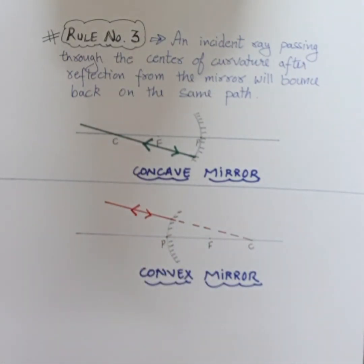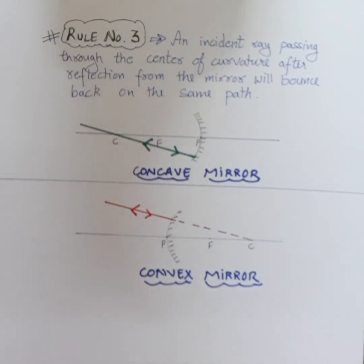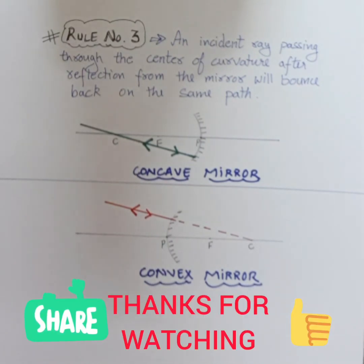So this is all about the three rules for drawing image formation in case of spherical mirrors. In my next video I will explain how to draw the nature of the spherical mirrors - that means concave mirror is a converging mirror and convex mirror is a diverging mirror. Thank you for watching.